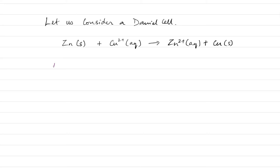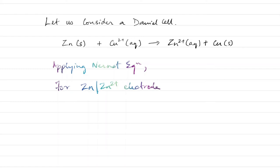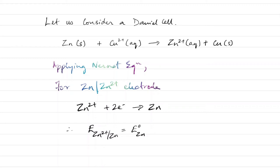Let us apply the Nernst equation to calculate the electrode potential of the two electrodes. The electrode potential is always taken as the reduction potential. For the zinc electrode, the reduction reaction is: Zn²⁺ + 2e⁻ → Zn. Therefore: E(Zn) = E°(Zn) + (RT/2F) log[Zn²⁺].